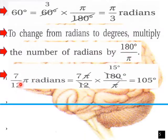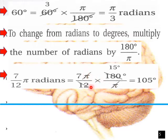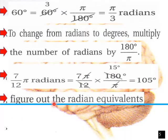For example, to convert 7π/12 radians into degrees, we multiply 7π/12 times 180 over π. The π cancels, and then 12 goes into 180 giving 15, so 7 times 15 equals 105 degrees. That would be the degree measure of 7π/12 radians.